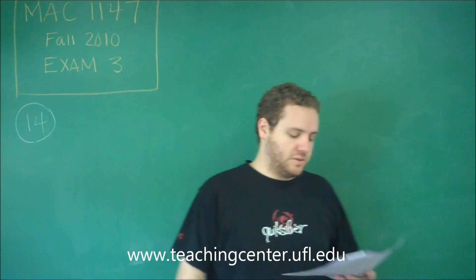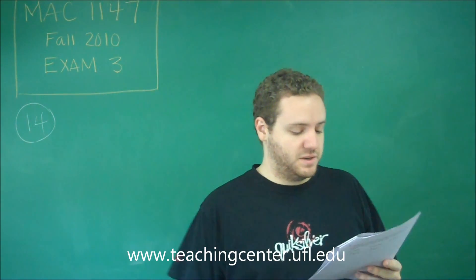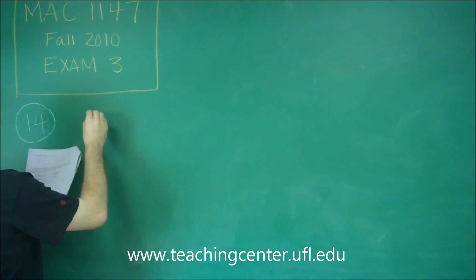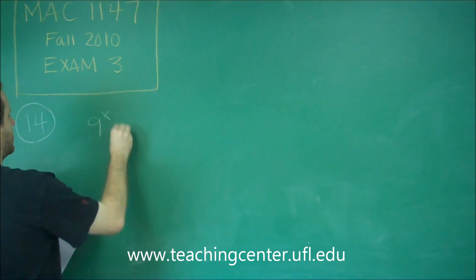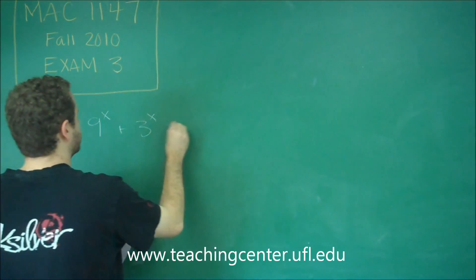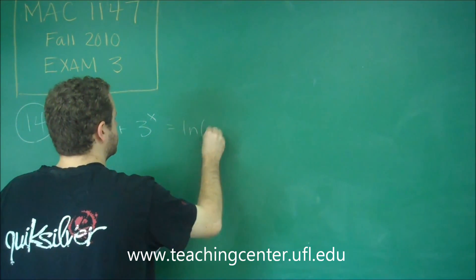So number 14, we're also solving an equation, this time an exponential equation. This one's going to draw on a couple of different pieces of information you've learned. You have 9^x + 3^x = ln(e^6).